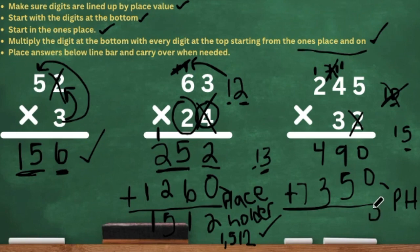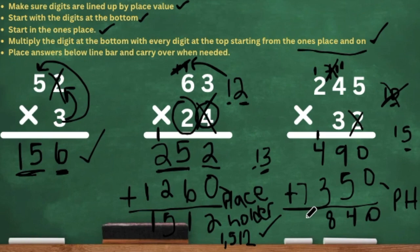So now we add: 0 plus 0 is 0. Nine plus 5 is 14 — put the 4, carry the 1. Then 4 plus 3 is 7, plus the 1, which is 8. And 7 plus nothing is 7. So our final answer is 7,840.